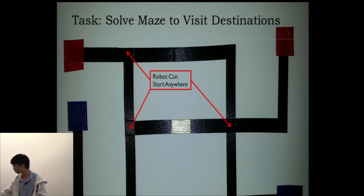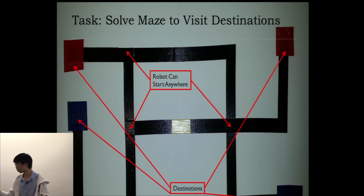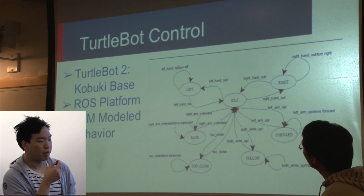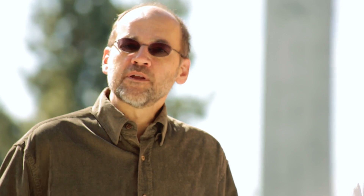Bear in mind that this course is taught with the same rigor that we use in the on-campus offering here at Berkeley, and it does have some of the prerequisites that we expect of our undergraduates here. We hope that you will enjoy this course as much as we have enjoyed preparing it for you. So welcome again to 149.1X Cyber-Physical Systems, and we'll see you in the virtual lab.